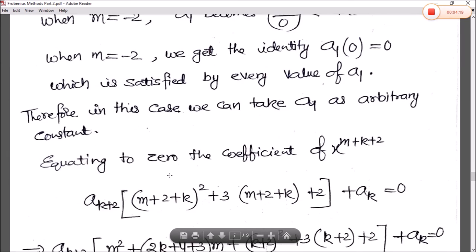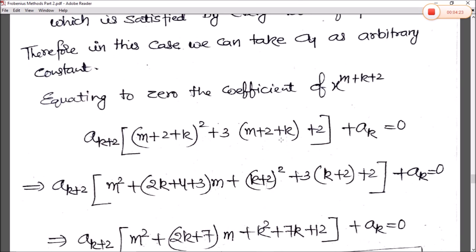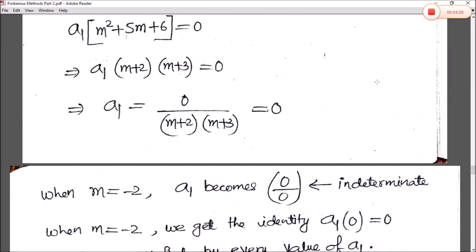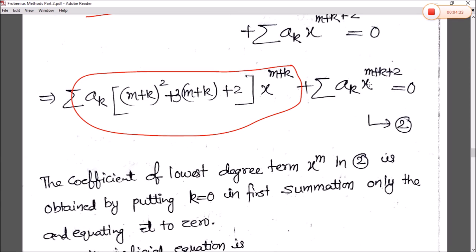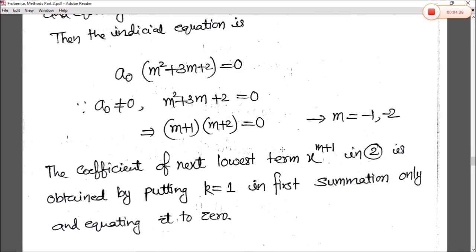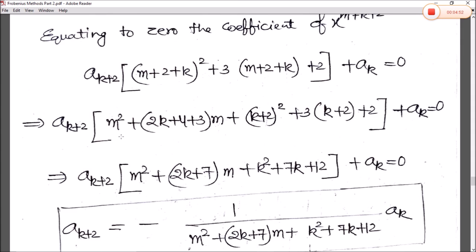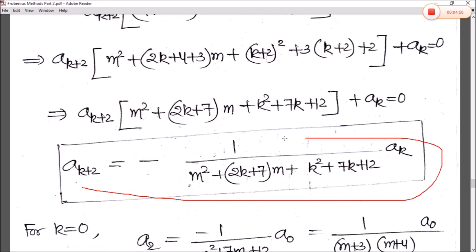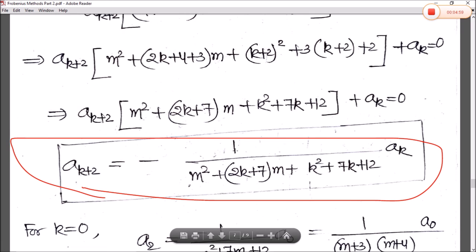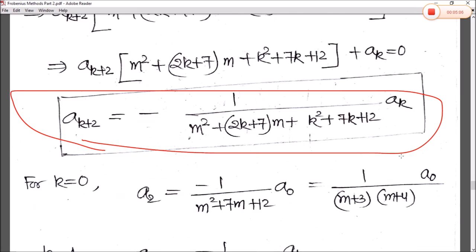To find the recurrence relation, equate the coefficient of x^(m+k+2) to zero. In equation 2, the x^(m+k+2) term has coefficient aₖ; substituting k+2 for k in the first summation gives aₖ₊₂. The equation becomes aₖ₊₂[m² + 2k + 7m + 2k + k + 2] + aₖ = 0. Solving, the recurrence formula is: aₖ₊₂ = −1/[(m + 2k + 7)(m + k + 3)(m + k + 4)] · aₖ.